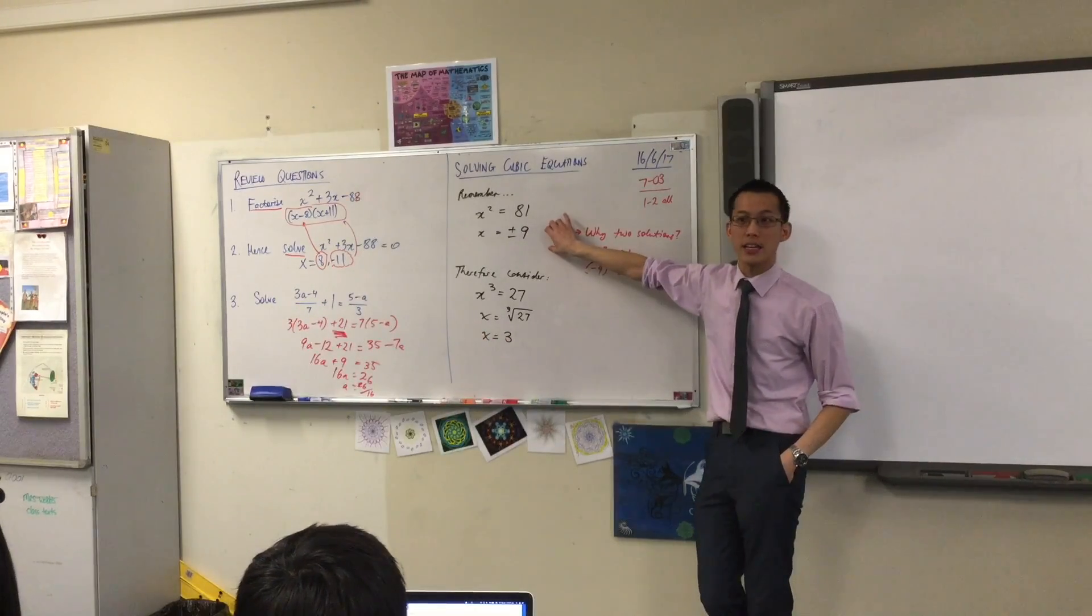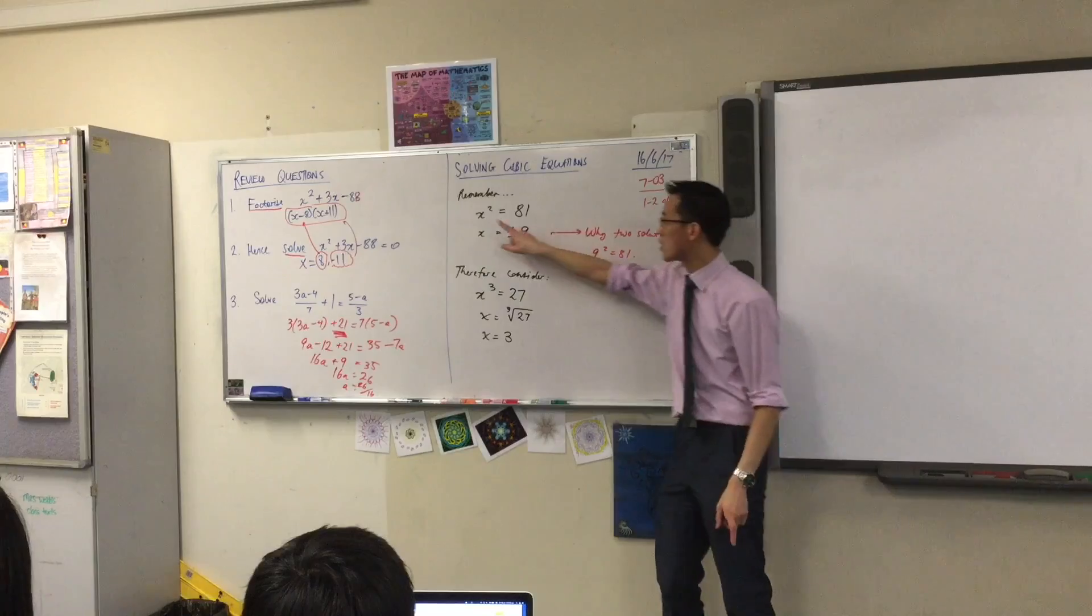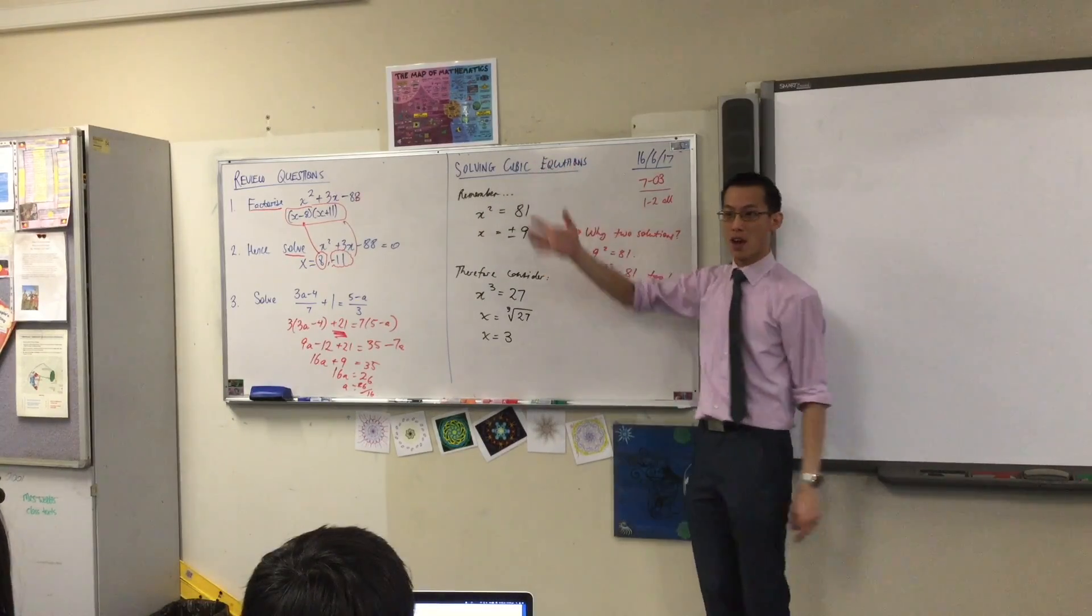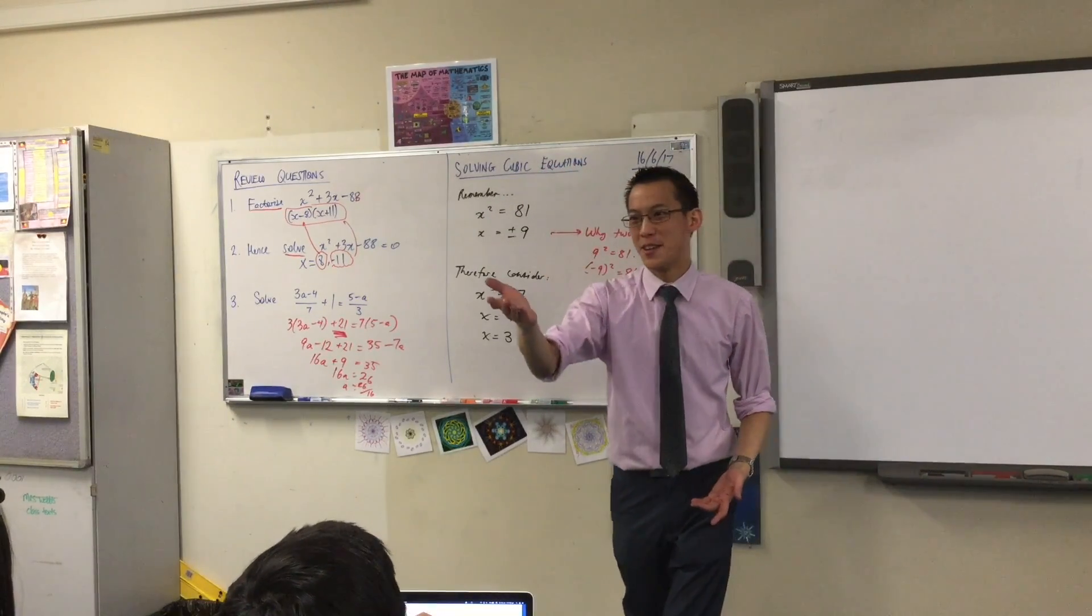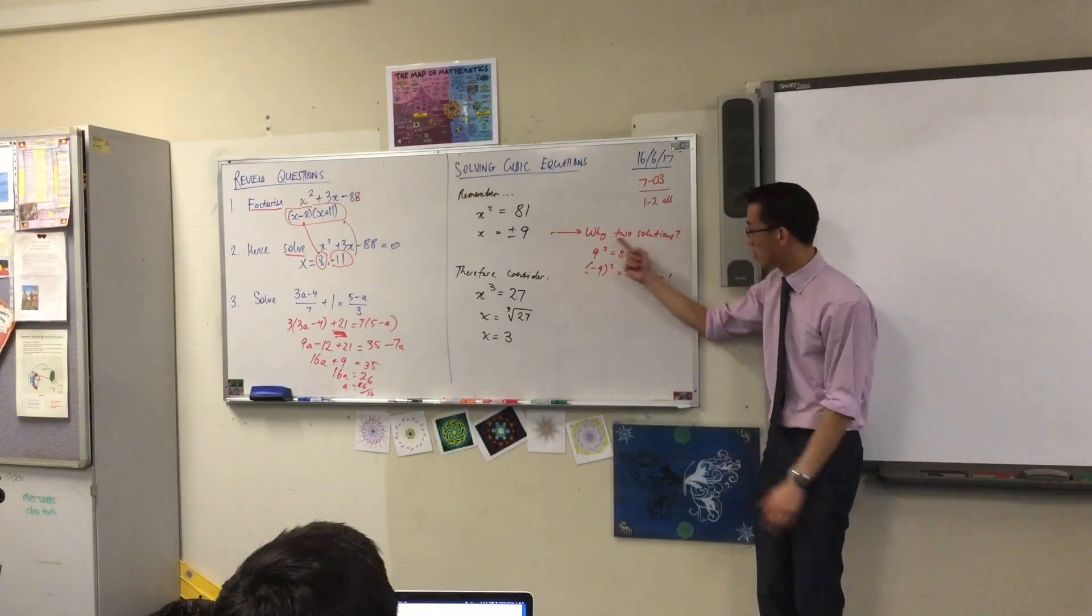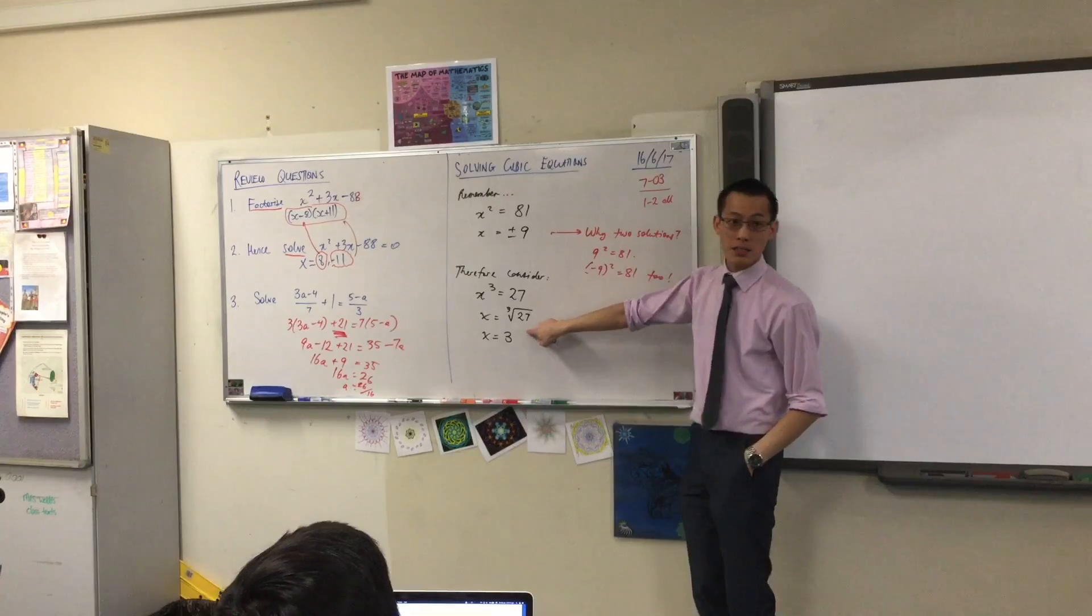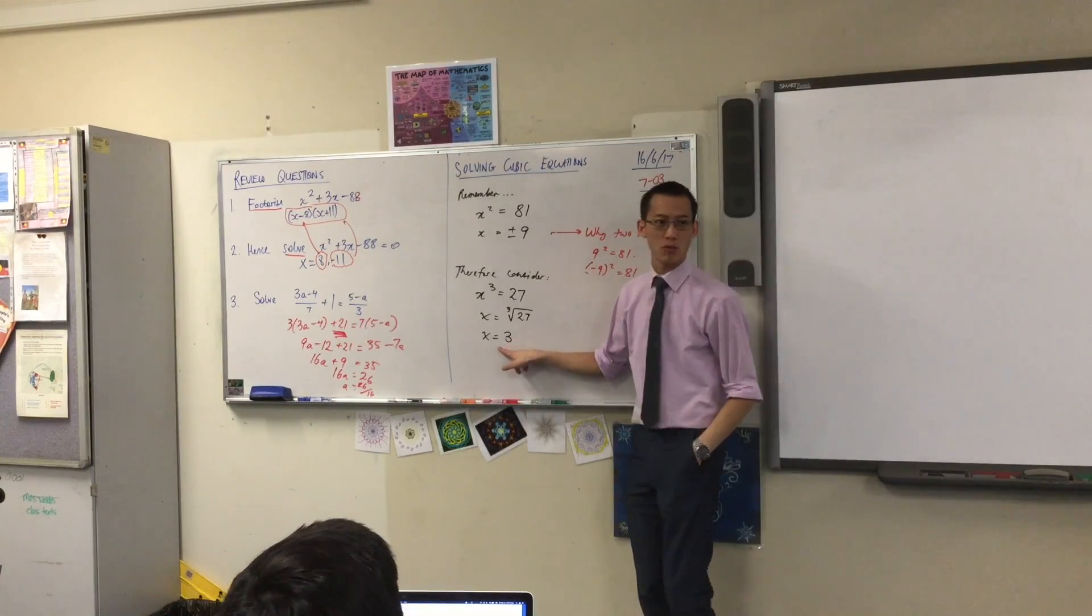We said plus minus 9 here. Now, many people, their conclusion is, oh, when you solve an equation like this, there's a plus or minus. Why is there? And the answer is because. But I'm trying to get across to you, it's not because. There's a real reason. The people who only say because, when they look at this, they'll put a plus minus here as well.